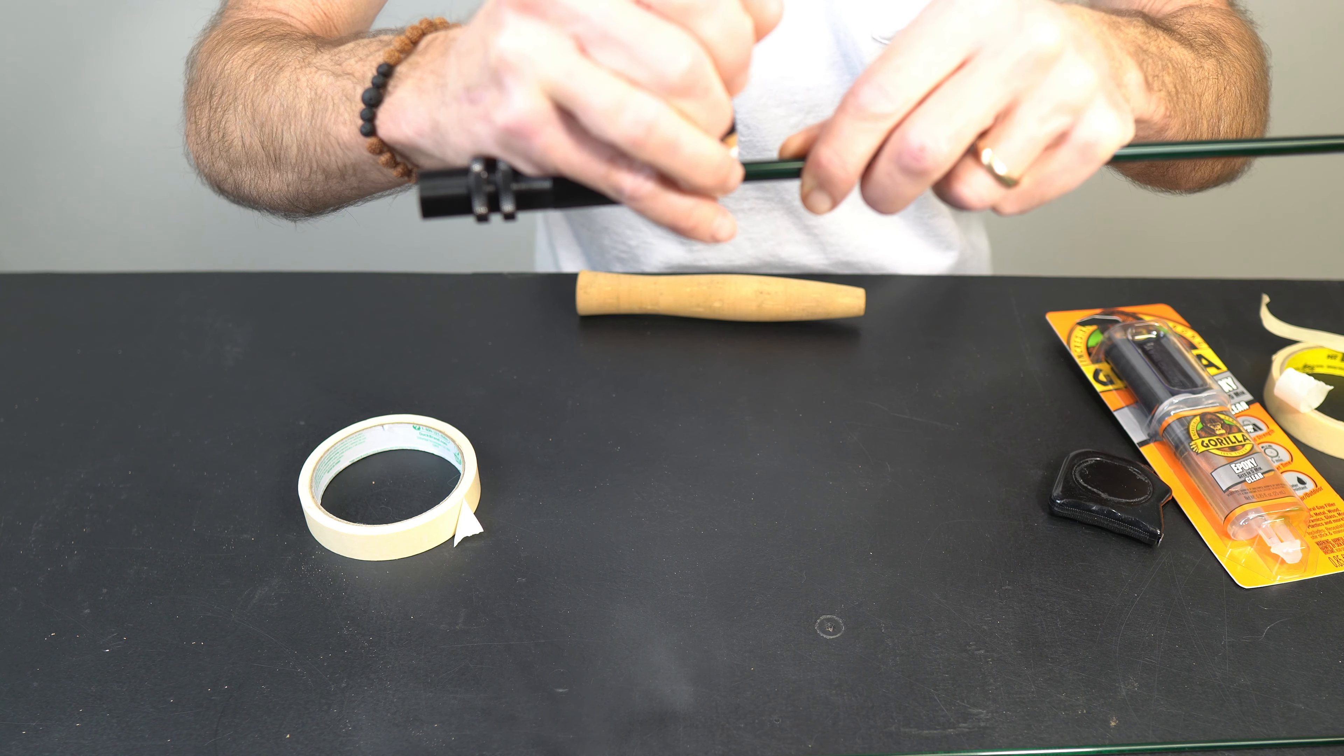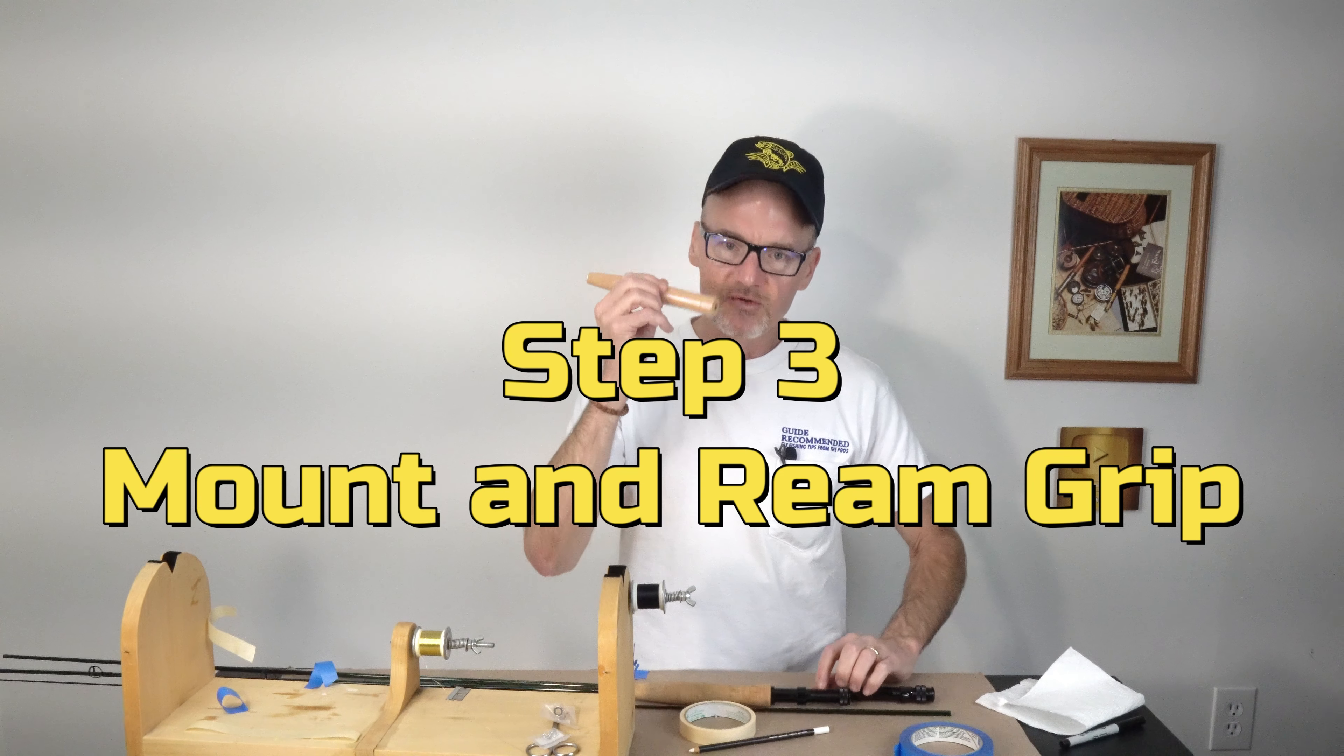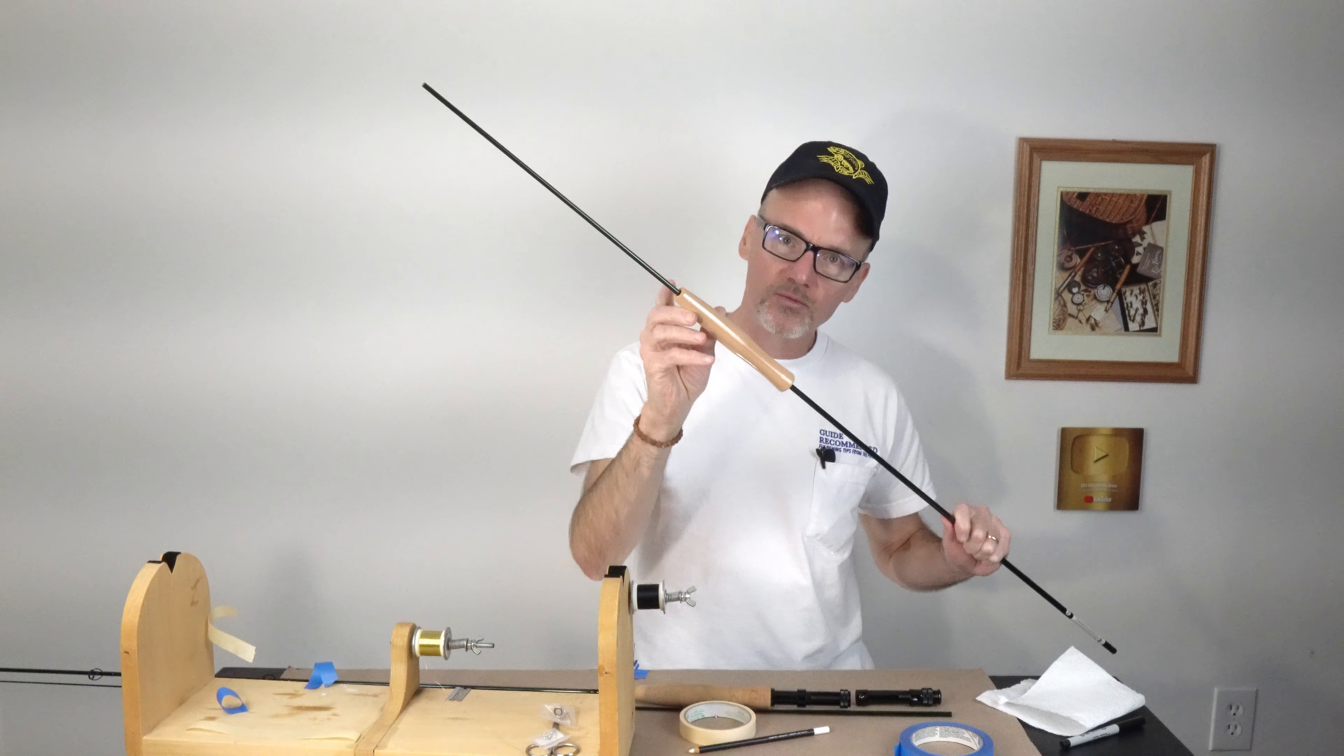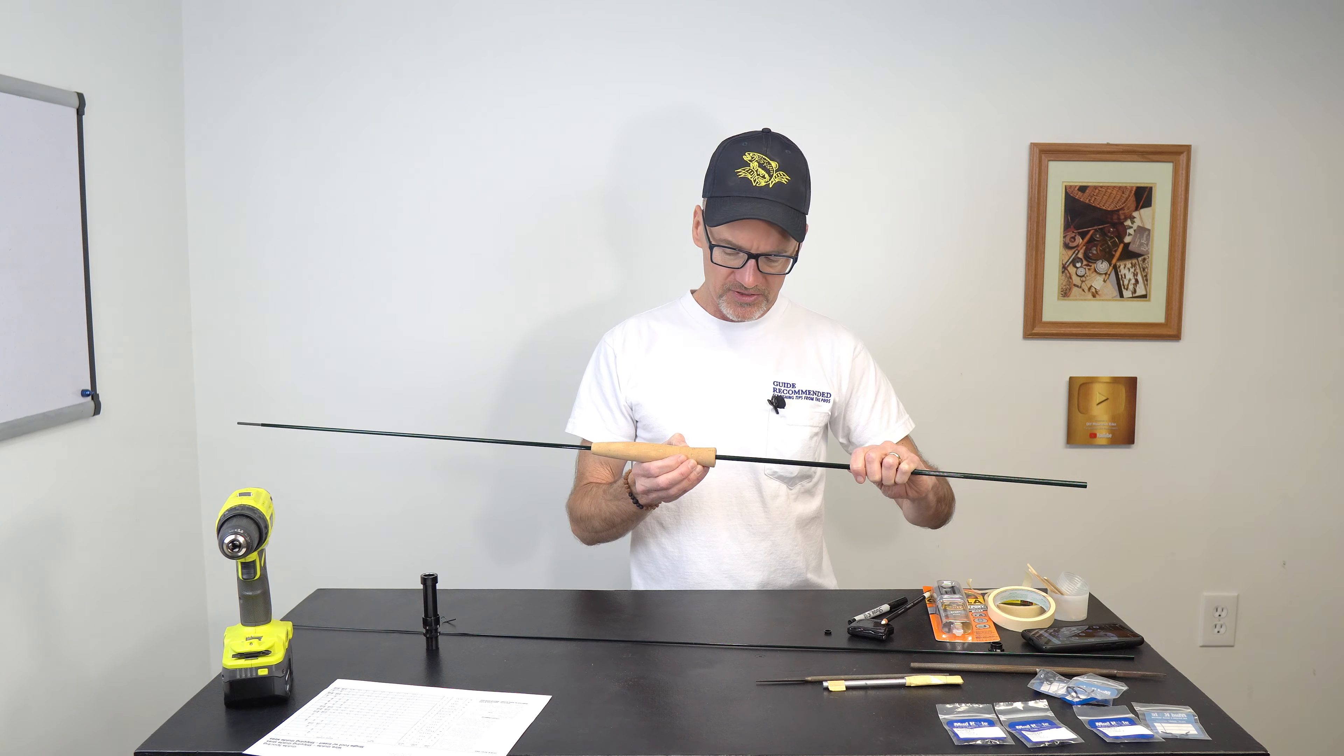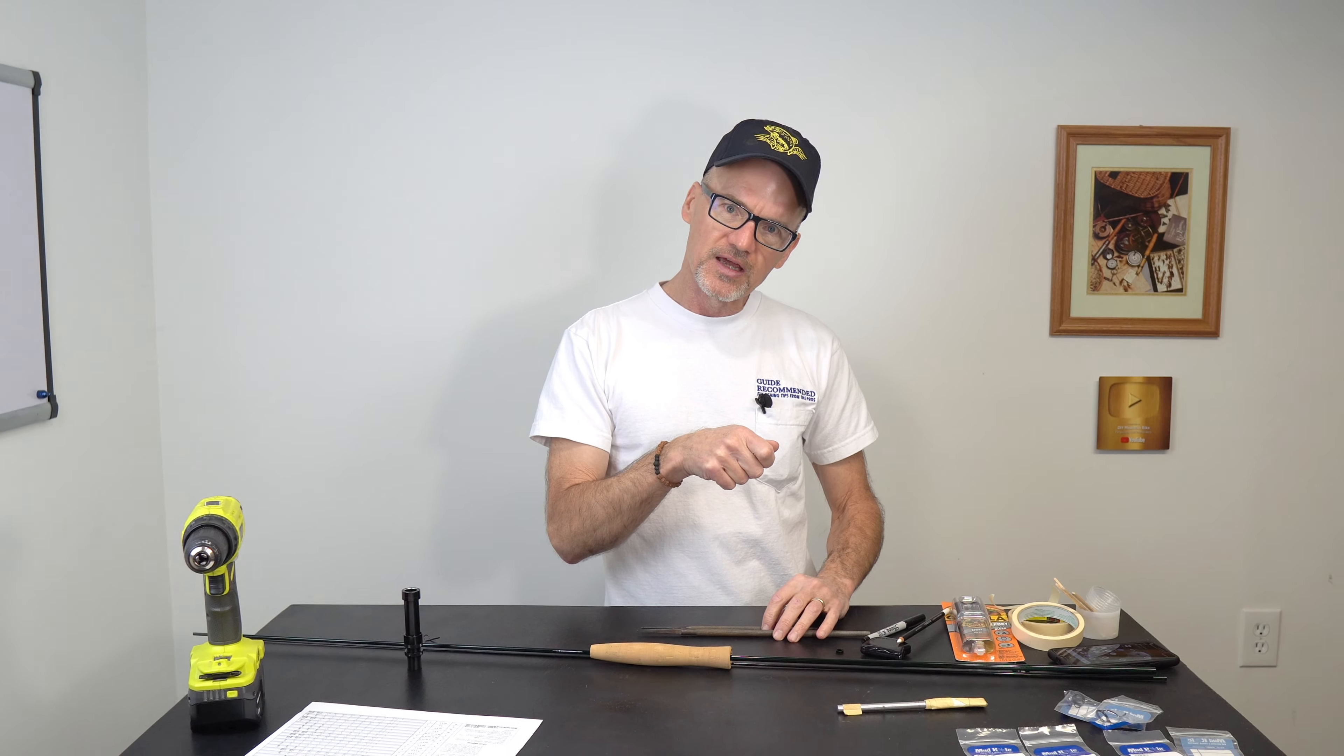Step three is mounting your grip. You're going to ream this out with a file or a reaming tool to get it to slide into position over your reel seat. Right there is about as far as I'm going to go. So I'm going to take my drill. I've got some different size files. There's reaming tools you can get as well and we're going to ream out the inside of that grip.